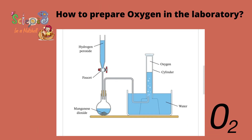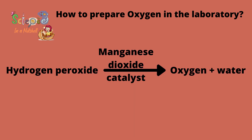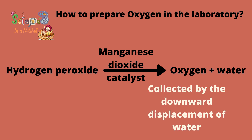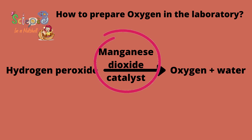How to prepare oxygen in the laboratory? We will get hydrogen peroxide and put manganese dioxide on it, so the hydrogen peroxide will dissociate into water and oxygen. The oxygen will be collected by the downward displacement of water, and the manganese dioxide works as a catalyst. A catalyst means that it will remain with the same properties and quantity.